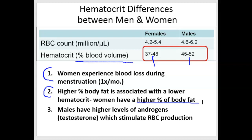Females tend to have a lower hematocrit, but probably the most important reason that males have higher numbers of red blood cells is due to the fact that they continuously make the hormone testosterone, and that stimulates red blood cell production.